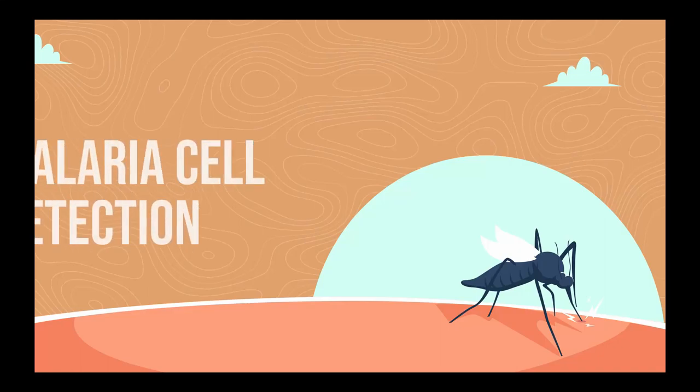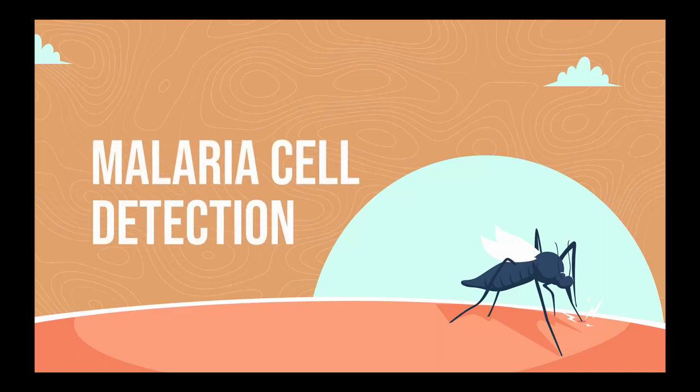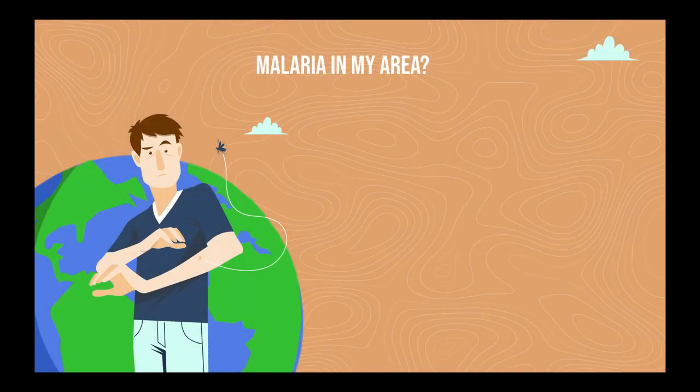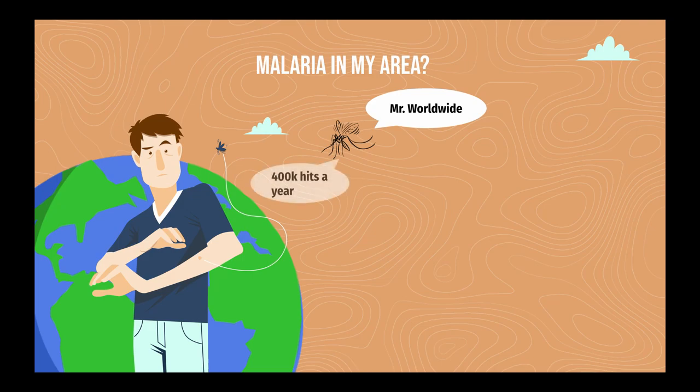Malaria is a serious and sometimes fatal disease caused by a parasite that commonly infects a certain type of mosquito, which then feeds on humans and infects red blood cells. It remains a major global health burden, with roughly 200 million cases worldwide.